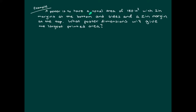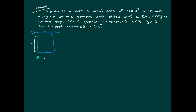We have a poster problem — the wording is very important here. The total area of the poster is 180 square inches, and there are margins. The question is: what dimensions should the poster be to give the largest printed area? First, draw a diagram. Let x and y be the total poster dimensions — the total width and total height — since the question asks for poster dimensions.